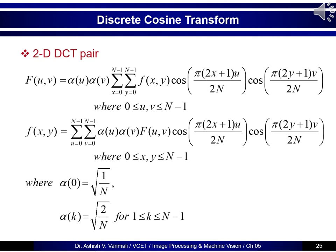Extending the DCT equation to the 2D case: F of u,v equals alpha_u times alpha_v, summation x from 0 to N minus 1, summation y from 0 to N minus 1, f of x,y times cos(pi(2x plus 1)u upon 2N) times cos(pi(2y plus 1)v upon 2N), where u and v both run over 0 to N minus 1. The corresponding inverse equation is f of x,y, with alpha_0 and alpha_k as previously discussed.